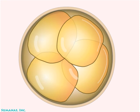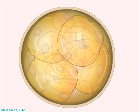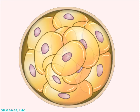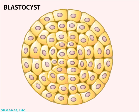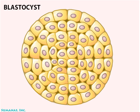With more divisions, a multicellular ball of cells, known as a blastocyst, is formed.